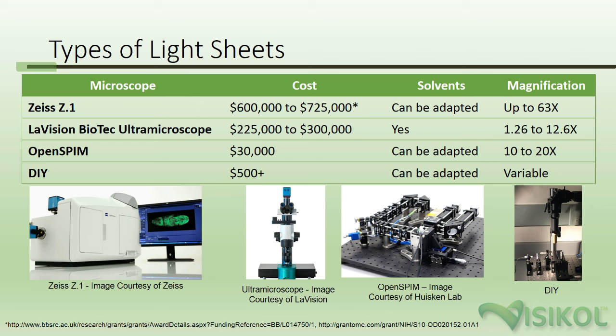The second consideration is how often you'll be using the light sheet and what features you need. The Zeiss Z1 is a top-of-the-line device for light sheet imaging in general, but has numerous features that you do not need if you're only interested in imaging cleared tissues. Because of the high cost of commercially available devices, researchers have developed DIY light sheet microscopes that can be built for as little as $500 and generate 3D renderings of fluorescently labeled cleared tissues.